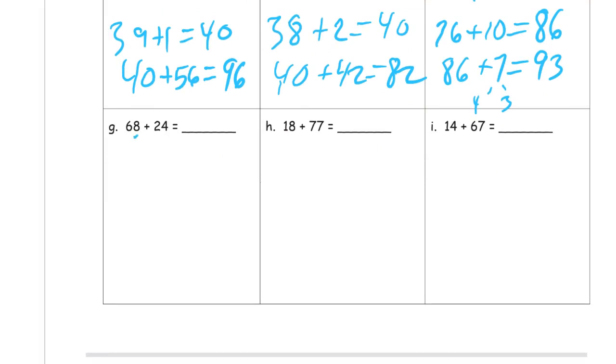68 plus 24. Well, here's an 8. So, I can take 2 from this 24. So, it's 2 and 22. 68 plus 2 equals 70. 70 plus the 22. Just looking at those tens digits. 7 plus 2 tells you that you need 9 tens. And just those 2 ones, 92.